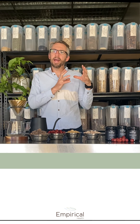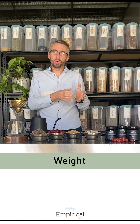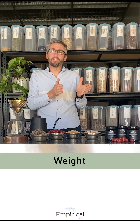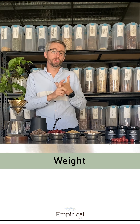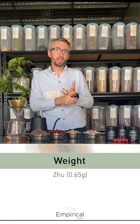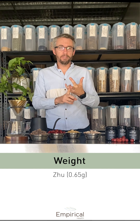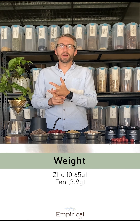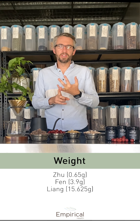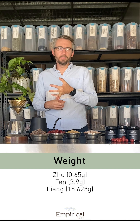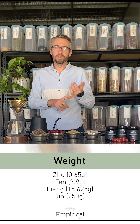In the category of weight, you had different variations. A Zhu was 0.65 grams, a Fen was 3.9 grams, a Liang was 15.625 grams, and a Jin was 250 grams.